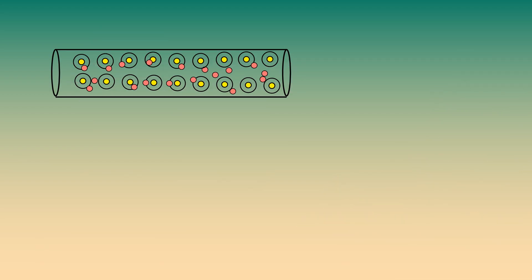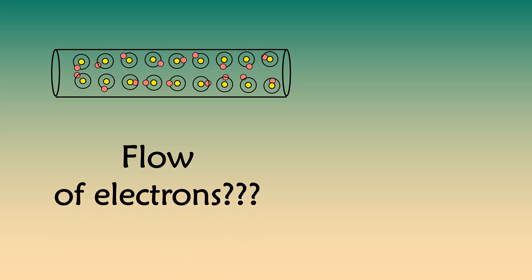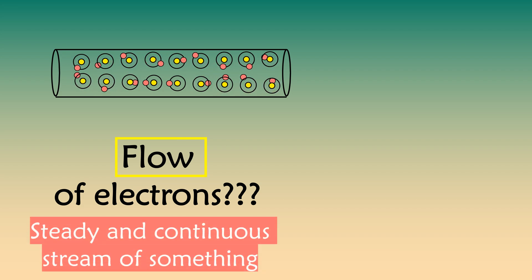Free electrons move randomly in the material. Can we consider this random movement of electrons as flow of electrons? What exactly does flow mean? It means a steady continuous stream of something.